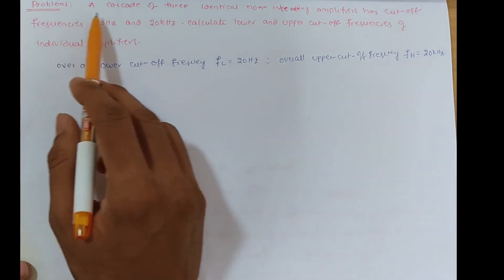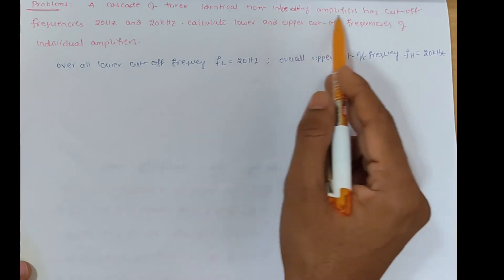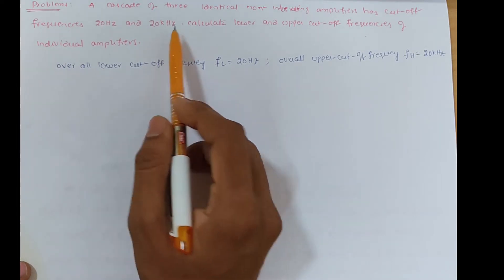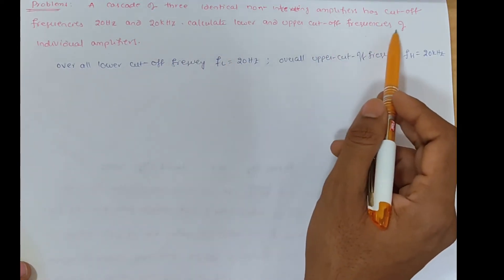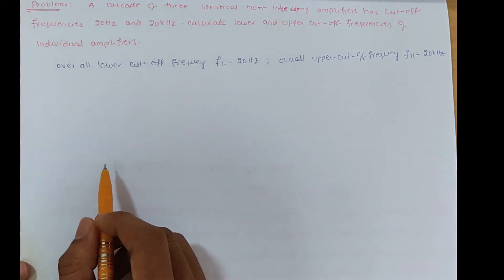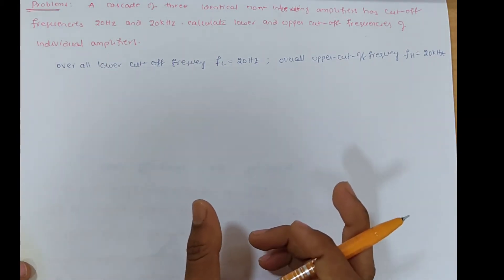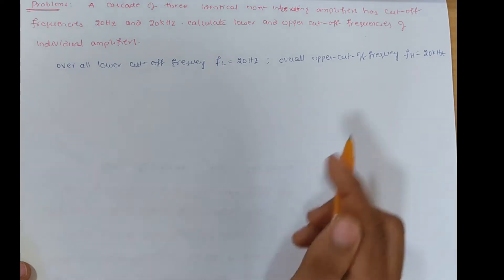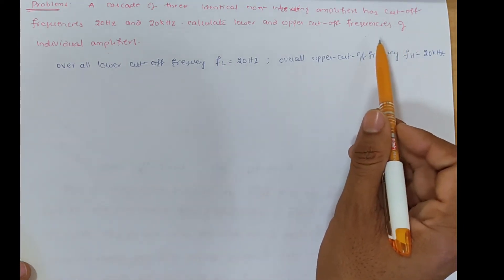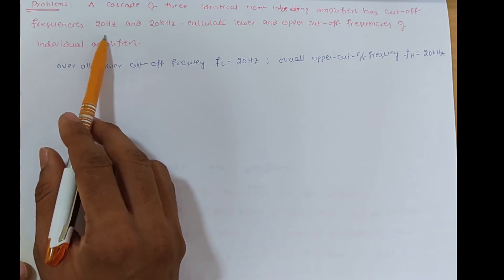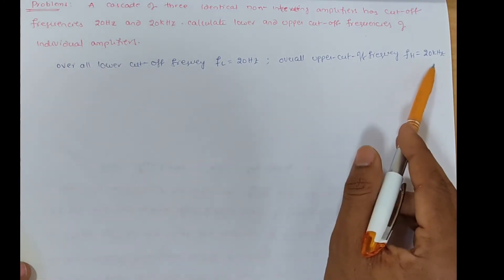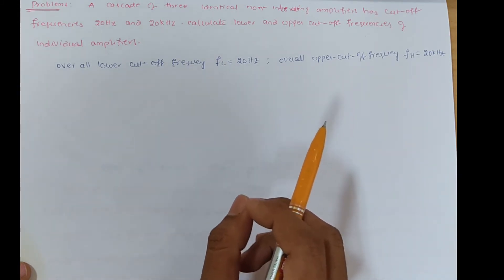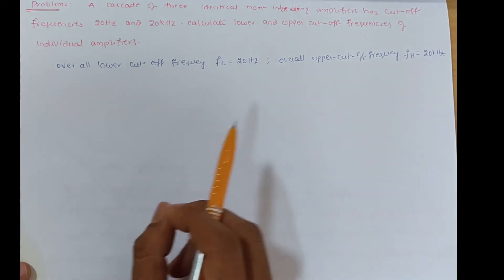Problem one: A cascade of three identical non-interacting amplifiers has cutoff frequencies 20 Hz and 20 kHz. Calculate the lower and upper cutoff frequencies of individual amplifiers. In this problem, three non-interacting amplifiers are cascaded. The overall lower cutoff frequency is given as 20 Hz and the upper cutoff frequency as 20 kHz. We need to find each amplifier's lower and upper cutoff frequency.